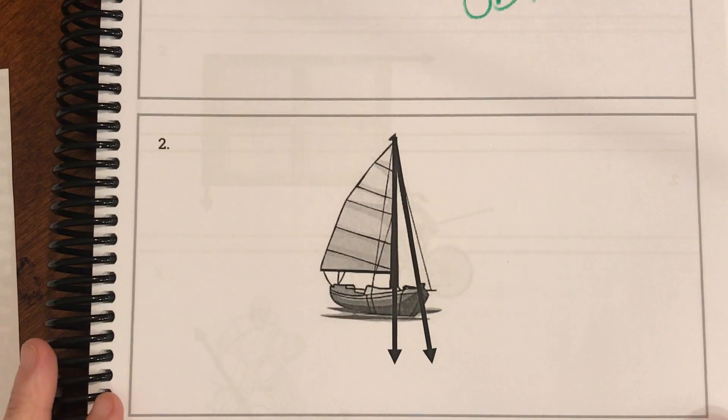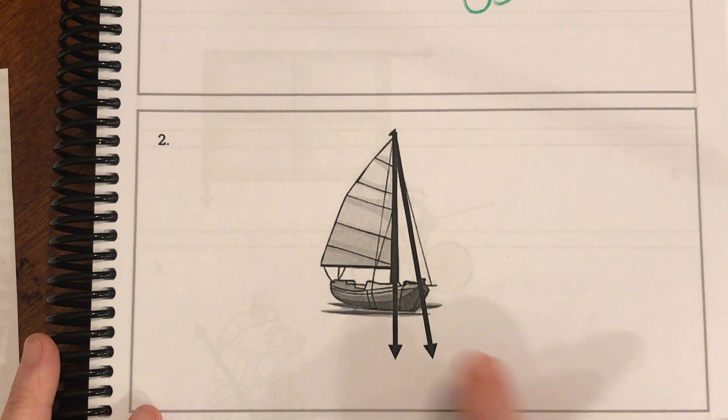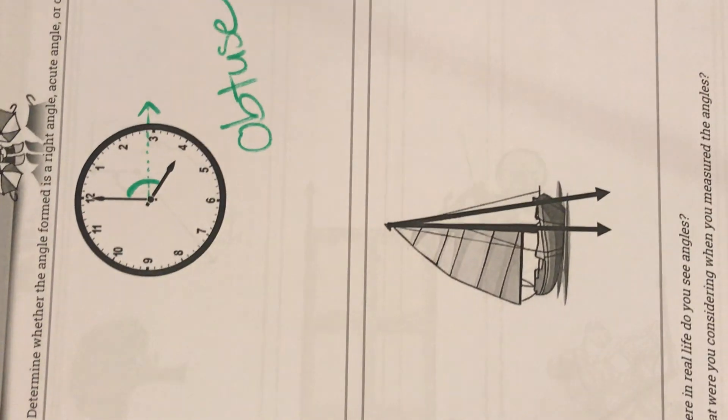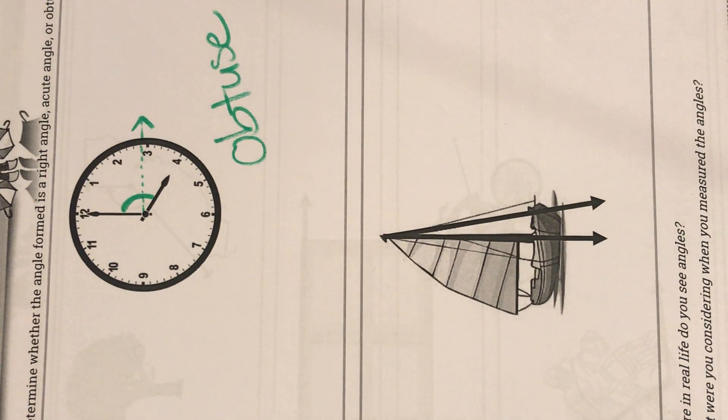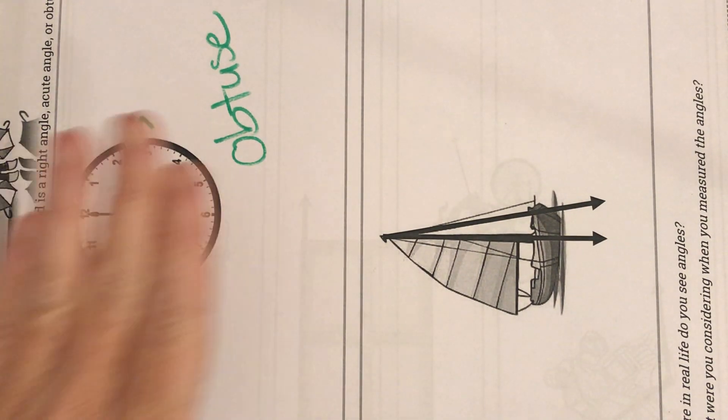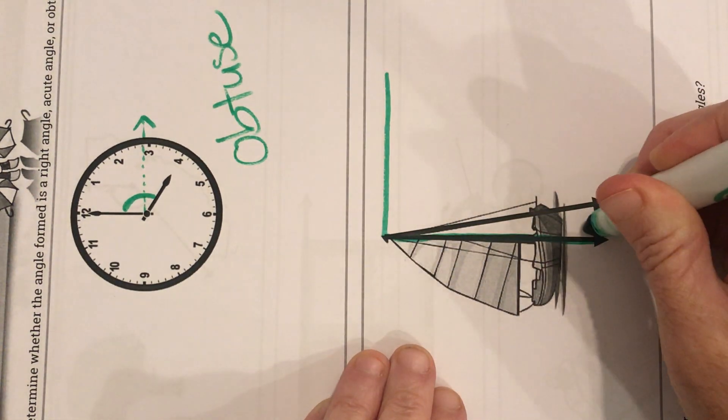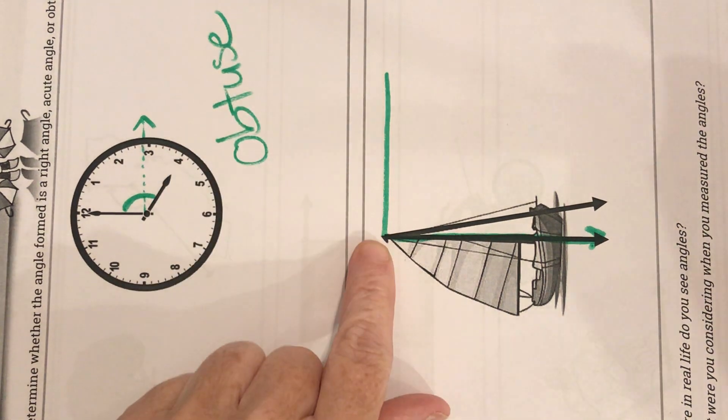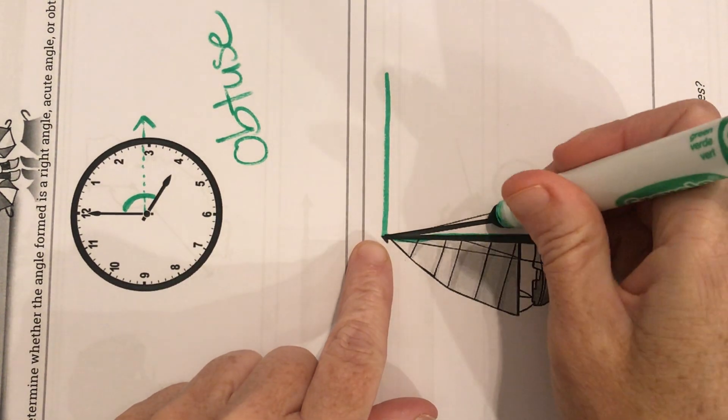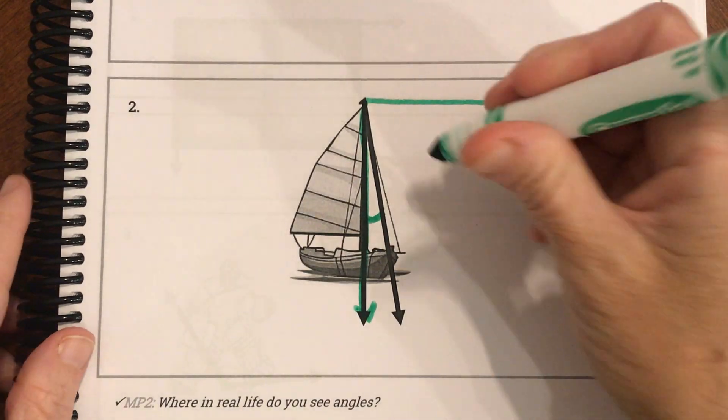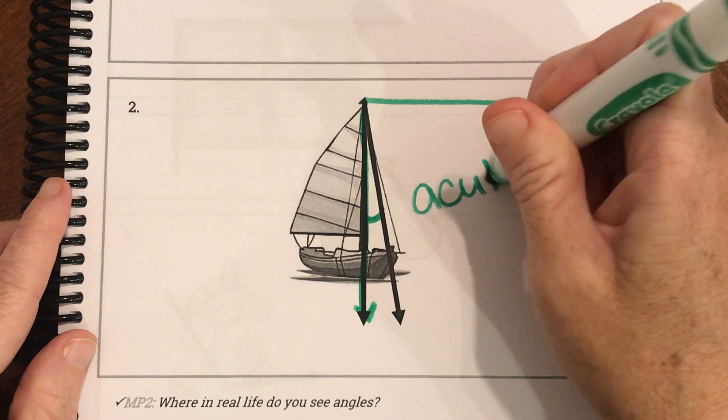Now, if we look at our next angle, they're giving us a sailboat, and they want to know maybe between the sail and the line, what's the angle? Again, you could turn your book if it helps you. It always helps me. I don't even know if I need my paper for this one because I could just picture an L. I could picture this perfect-shaped L would have been 90 degrees, and look how small this opening is compared to a 90 degree. So, I know that that one's definitely going to be a small, acute angle.